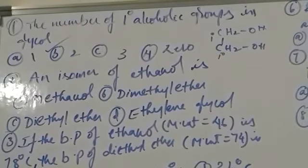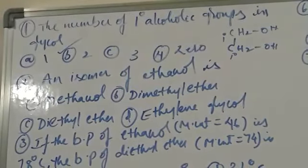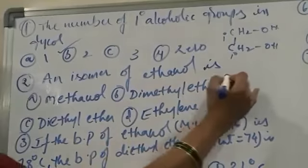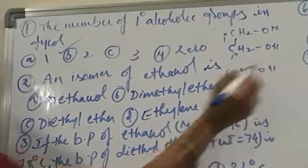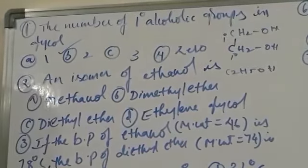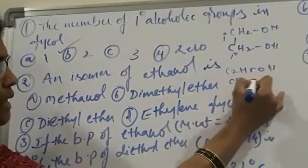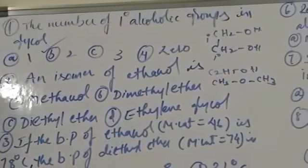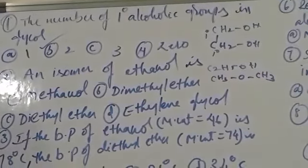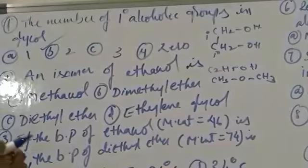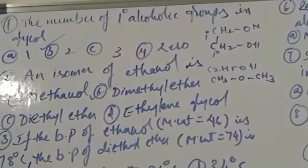An isomer of ethanol: alcohols are isomeric with ethers. Ethyl alcohol C₂H₅OH is isomeric with dimethyl ether CH₃OCH₃. Both are functional isomers having the same molecular formula C₂H₆O — one having an alcohol functional group and the other having an ether functional group. So the isomer of ethanol is dimethyl ether.